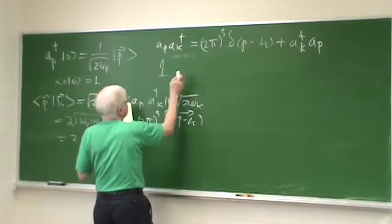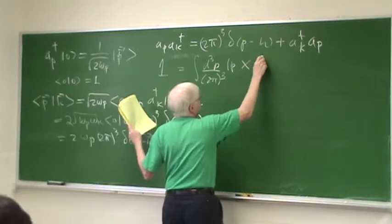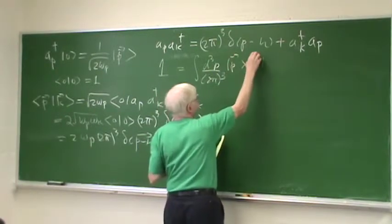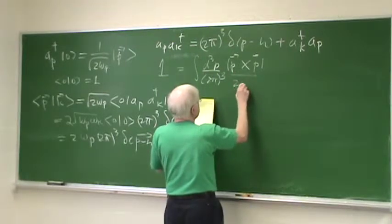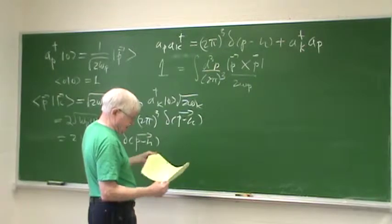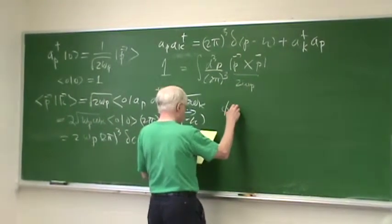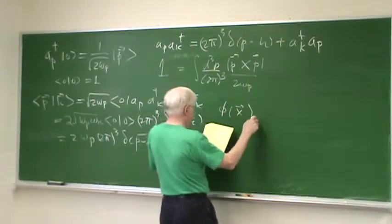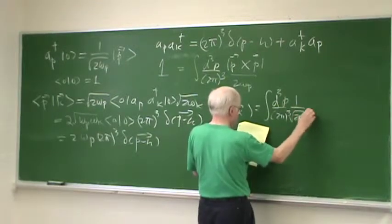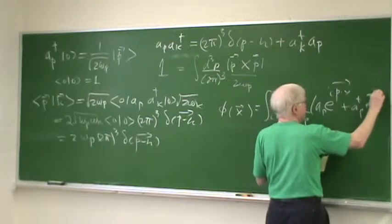What we saw also last time was that the one-particle identity operator is integral d³p/(2π)³ |p⟩⟨p| — this is my lazy way of writing the outer product of two p-states — divided by 2 omega-p. Our field at time 0, position x, we write it as: d³p/(2π)³ times 1/sqrt(2 omega-p) times [a(p) e^(ip·x) + a-dagger(p) e^(−ip·x)].